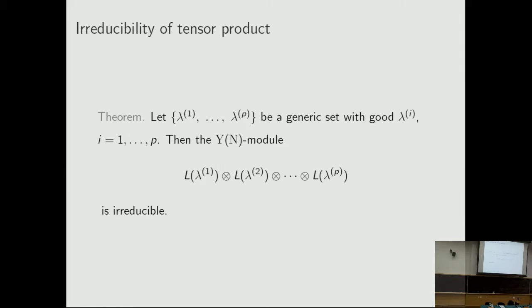And we have the following theorem. Let Lambda be a generic set of good weights. Then the Yangian module is irreducible. Here generic means the difference between different lambda values is not an integer.